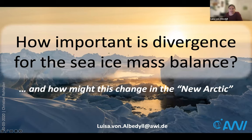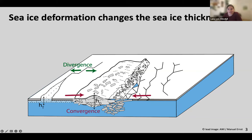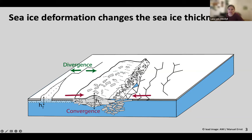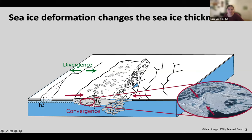Let's start with the basics. This schematic shows sea ice deformation in a nutshell. When there is convergence, sea ice flows collide and form pressure ridges. When the opposite takes place — when there is divergence — they move apart from each other and leave open water behind.